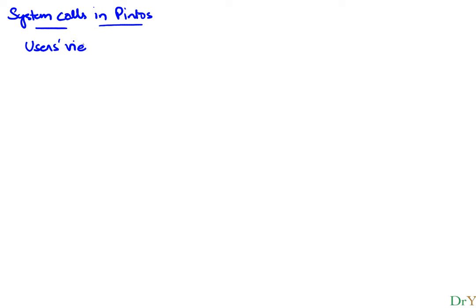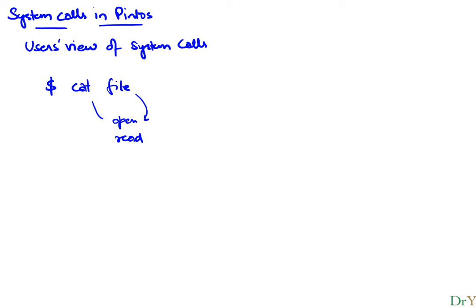The first thing we need to understand is the user view of system calls. For example, if I type something like 'cat a file' at the command prompt, I'm running a program called cat. What cat does is it opens a file, reads from it, and displays the contents — all of these are actual system calls.